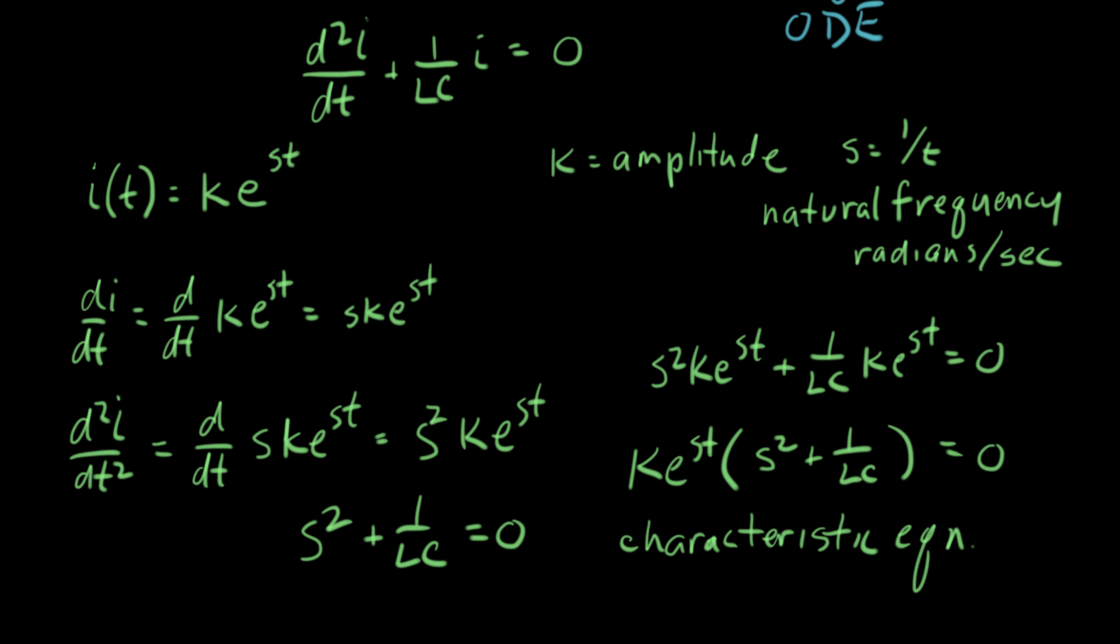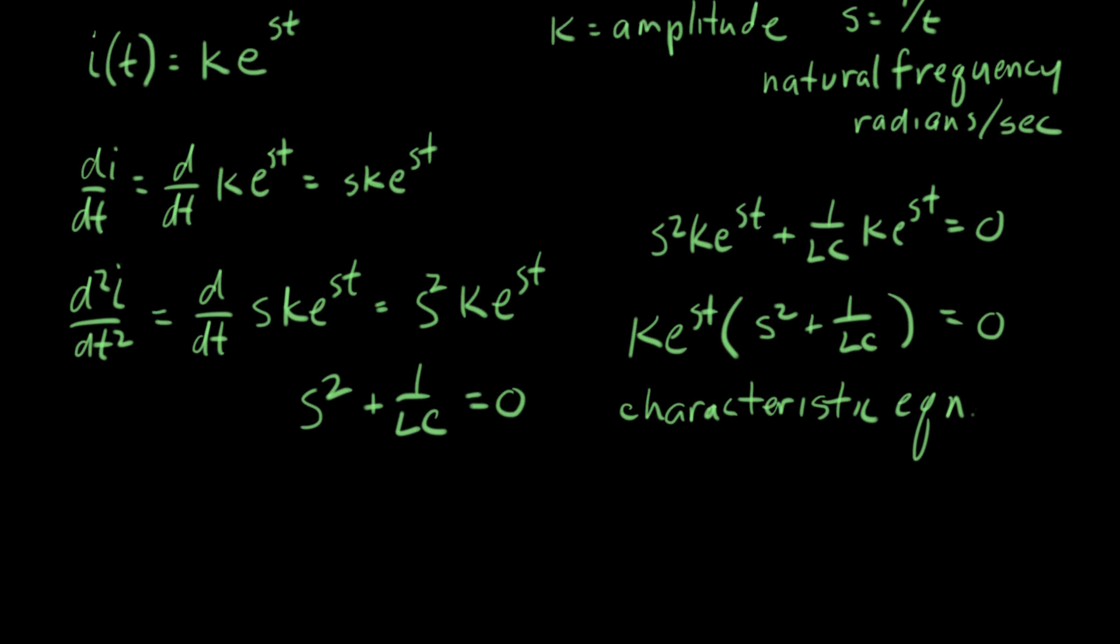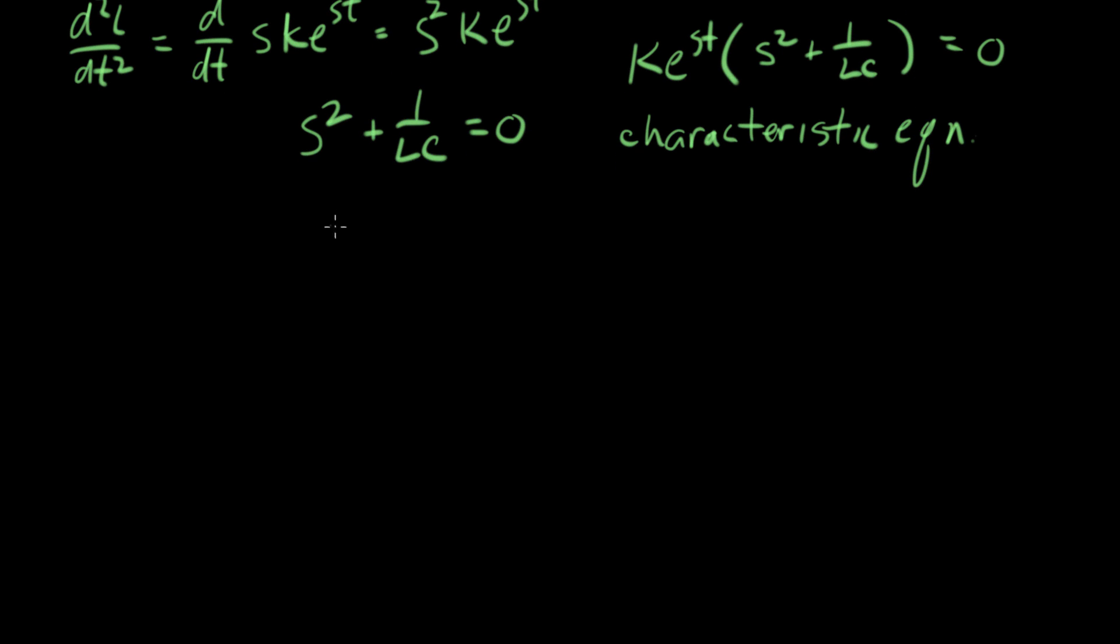This equation is referred to as the characteristic equation. So let's see what happens when we try to solve this. Well, the first step is I'm going to get s squared equals minus one over LC, or s equals square root of minus one over LC. Uh-oh, look what happens here. We're taking the square root of a negative number. So what's going to happen here? We're going to get an imaginary number for our answer.